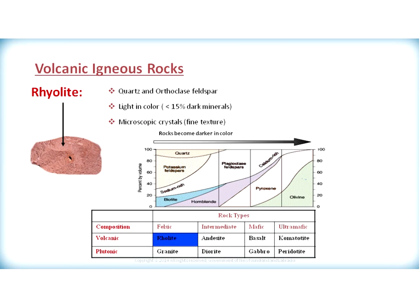One such volcanic igneous rock is rhyolite. Rhyolite is mainly composed of felsic minerals, including quartz and orthoclase feldspar. They are generally light in color and generally have less than 15% dark minerals. Their crystals are microscopic and cannot be seen with the naked eye; therefore, rhyolite would have a fine texture. If you look at the classification chart, rhyolite falls in what's called a felsic composition — all the minerals located to the left of the dark line are found within rhyolite.